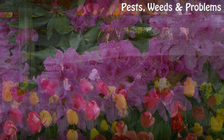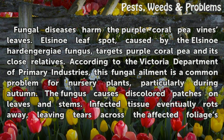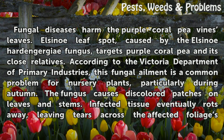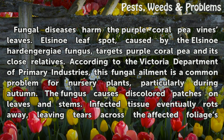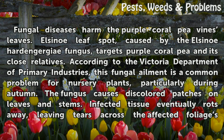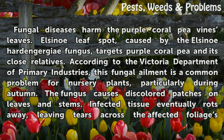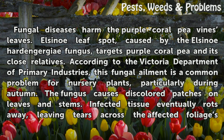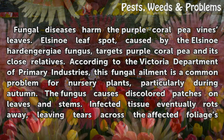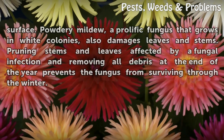Diseases. Fungal diseases harm the purple coral pea vine's leaves. Elcinae leaf spot, caused by the Elcinae hardenbergiae fungus, targets purple coral pea and its close relatives. According to the Victoria Department of Primary Industries, this fungal ailment is a common problem for nursery plants, particularly during autumn. The fungus causes discolored patches on leaves and stems, and infected tissue eventually rots away, leaving tears across the affected foliage's surface.